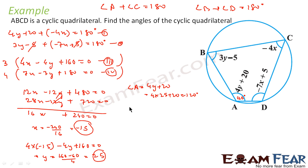Now angle B is nothing but 3y minus 5, that is 3 into 25 minus 5, that is 75 minus 5, that is 70 degrees. So this is 70 degrees.